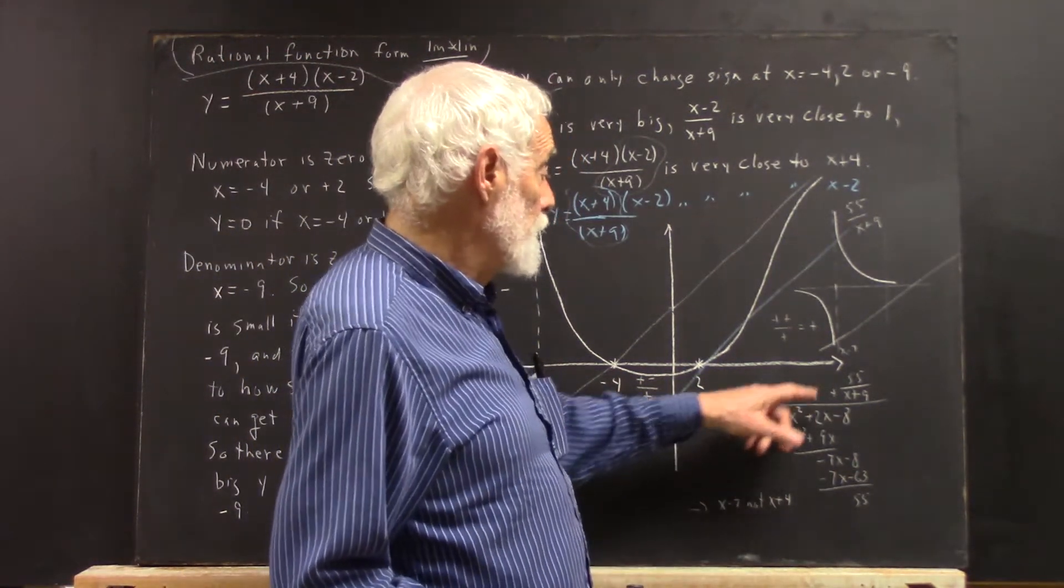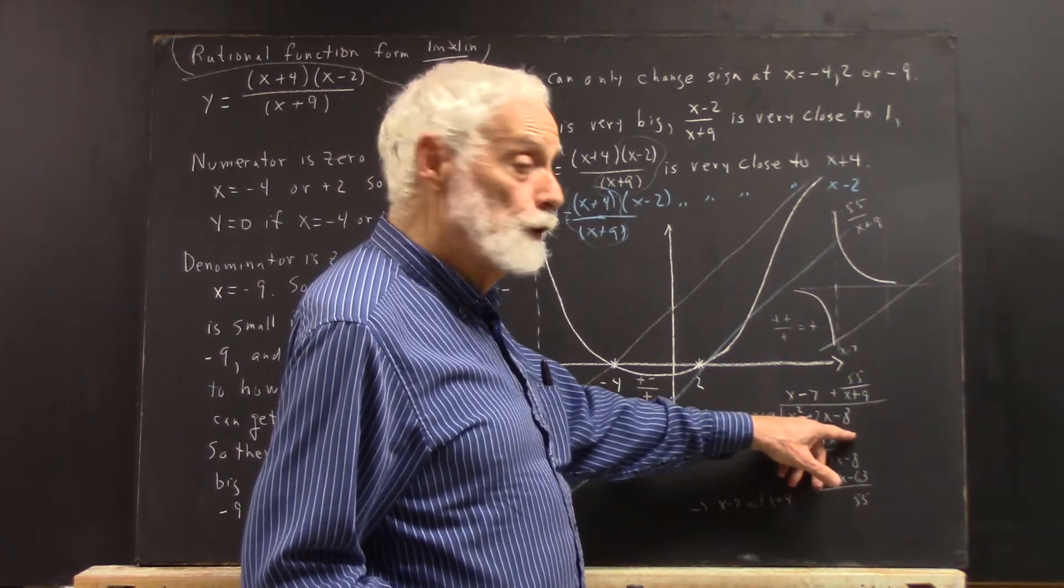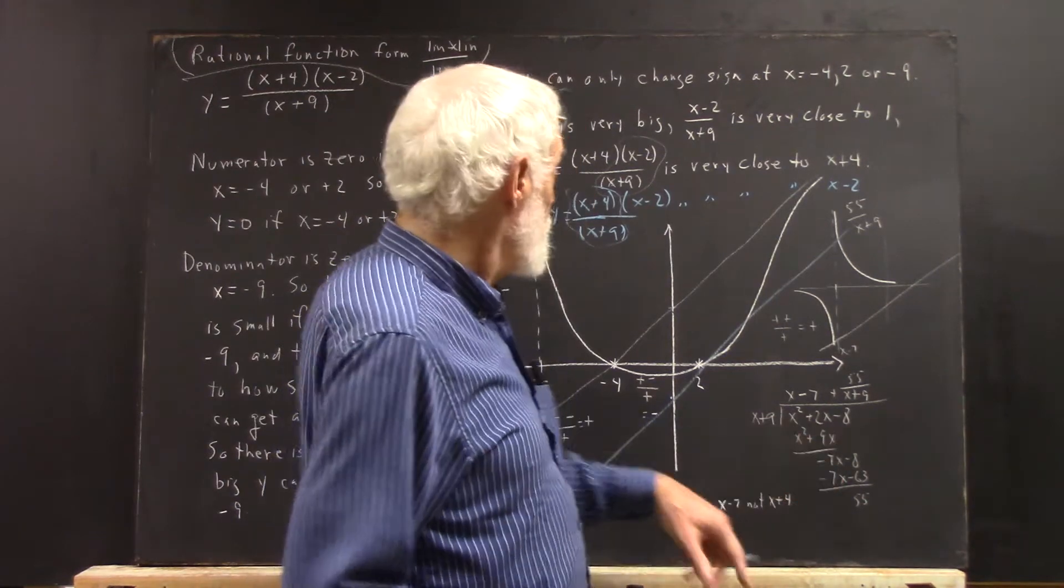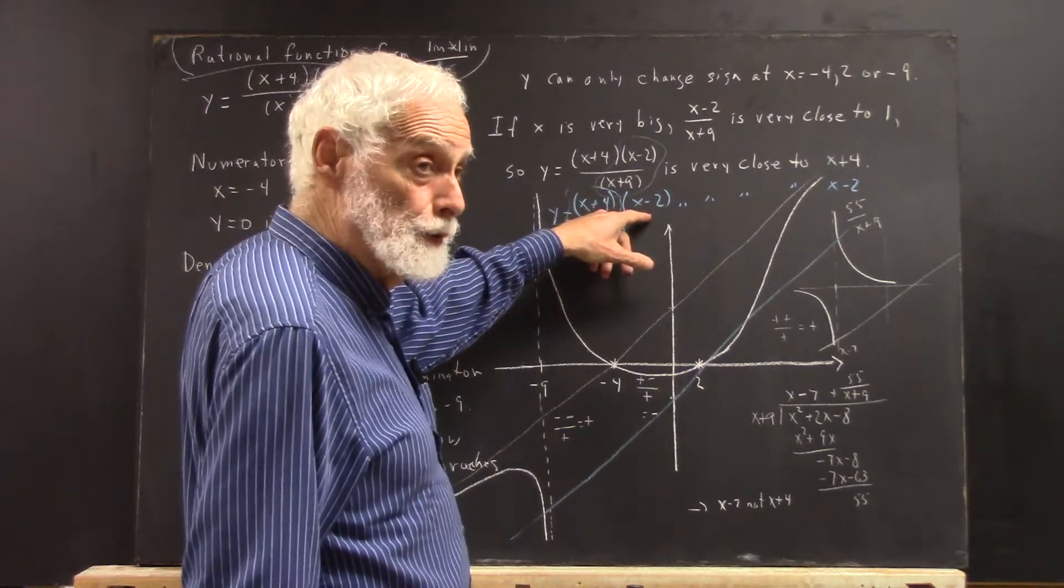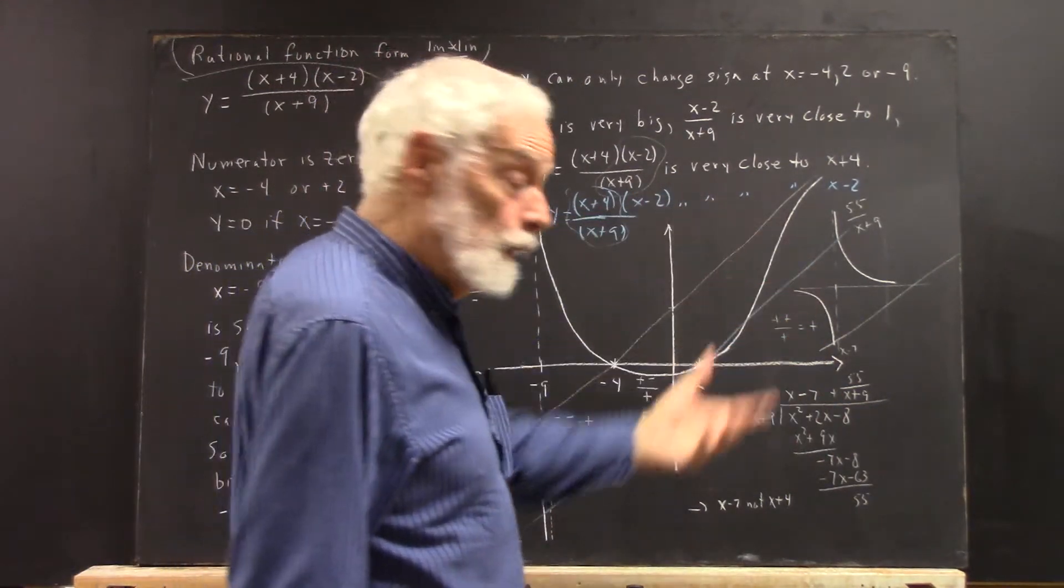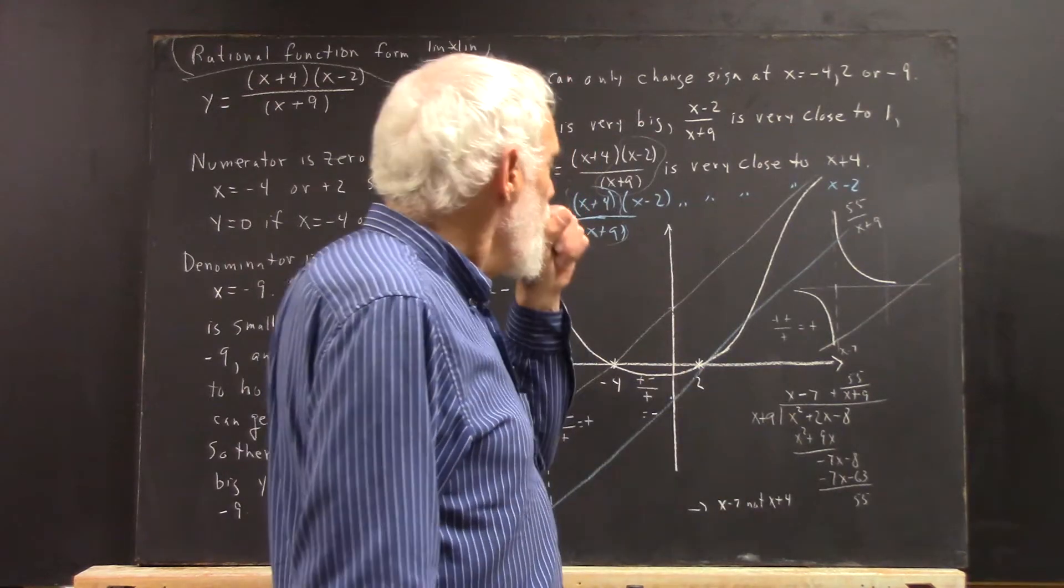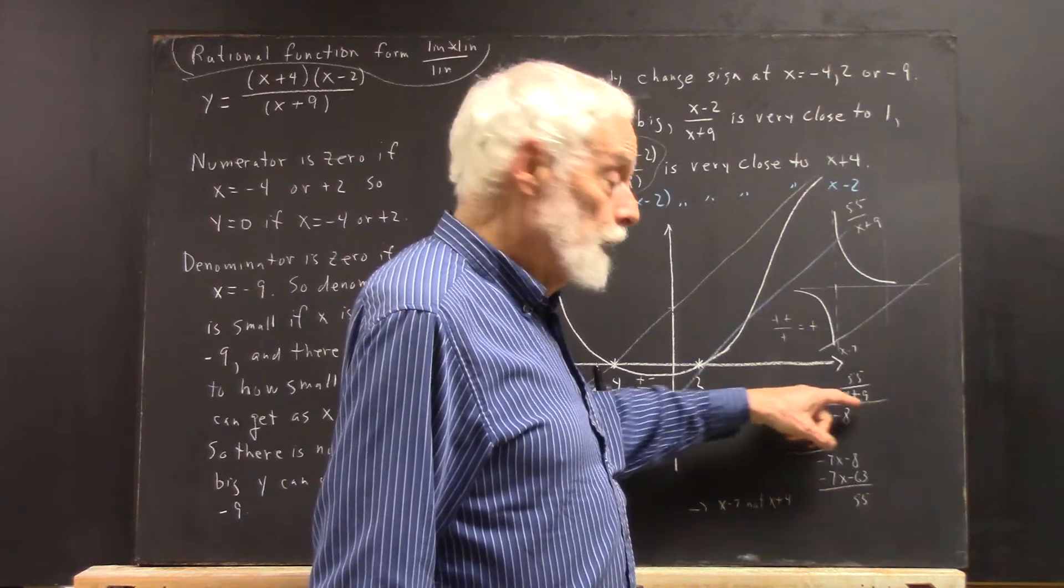In any case, we do the long division: x+9 into x²+2x-8. And why x²+2x-8? Well, that's what we get if we multiply (x+4) times (x-2). You can use the distributive law and verify that for yourself. And we get x-7 plus 55/(x+9).